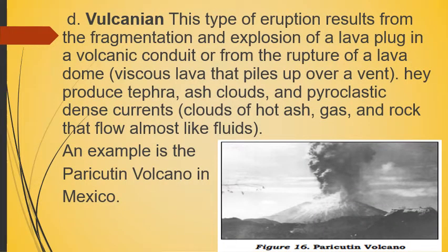D) Vulcanian: this type of eruption results from the fragmentation and explosion of a lava plug in a volcanic conduit, or from the eruption of a lava dome — viscous lava that piles up over a vent. They produce tephra, ash clouds, and pyroclastic dense currents — clouds of hot ash, gas, and rock that flow almost like fluids. An example is the Paricutin volcano in Mexico.